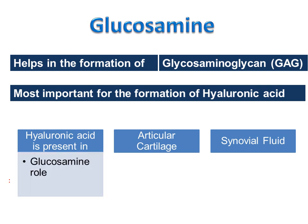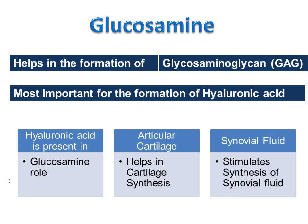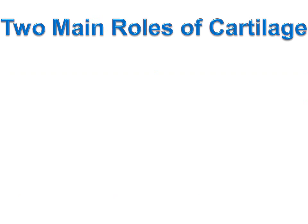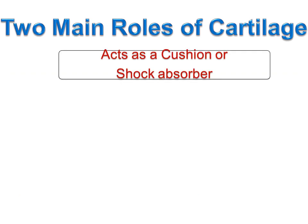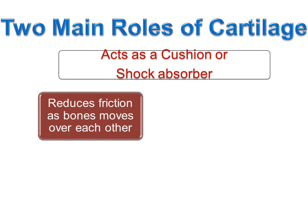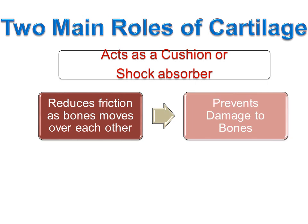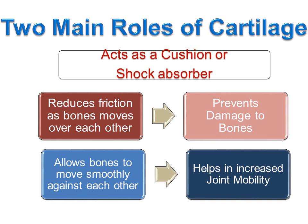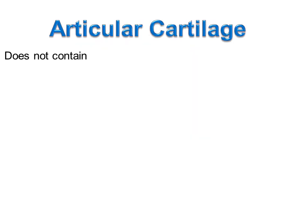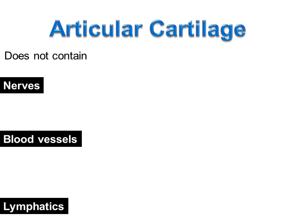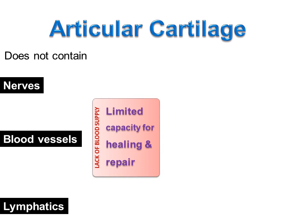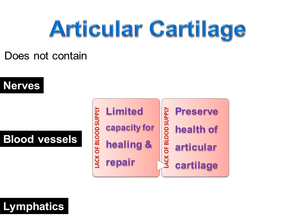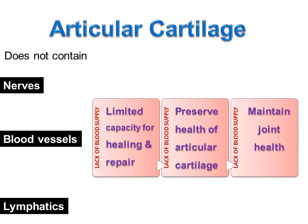The role of glucosamine is to help in cartilage synthesis and stimulate the synthesis of synovial fluid. The two main roles of cartilage are: cartilage acts as a cushion or shock absorber, and cartilage reduces friction as the bones move over each other, hence preventing damage to the bones — allowing bones to move smoothly against each other, therefore helping in increased joint mobility. Articular cartilage does not contain nerves, blood vessels, or lymphatics. Because of the lack of blood supply, articular cartilage has limited capacity for healing and repair. Therefore, it is very important to preserve the health of the articular cartilage in order to maintain joint health.